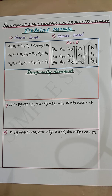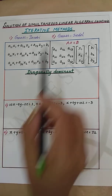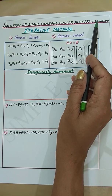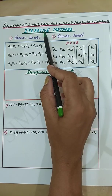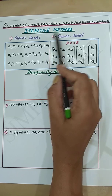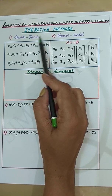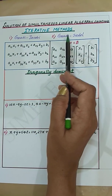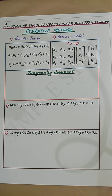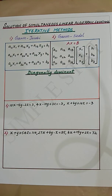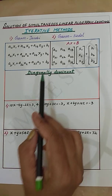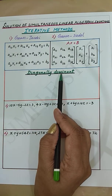For solving simultaneous linear algebraic equations, we are going to discuss two iterative methods here, namely Gauss-Jacobi and Gauss-Seidel. Iterative methods will succeed only if the given system of equations is diagonally dominant.